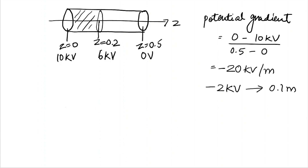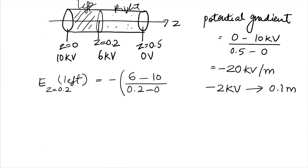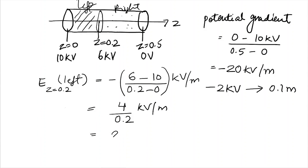To find the electric field, we divide the medium into a left part and a right part. The electric field at Z equal to 0.2 due to the left part will be equal to minus of (6 minus 10) divided by (0.2 minus 0) kilovolts per meter. So that is minus of minus 4 over 0.2, which gives positive 4 over 0.2, equal to 20 kilovolts per meter.